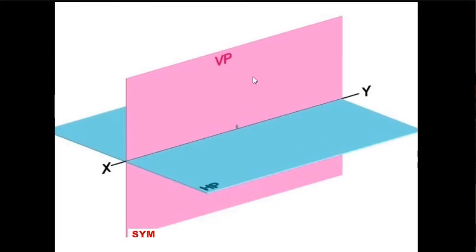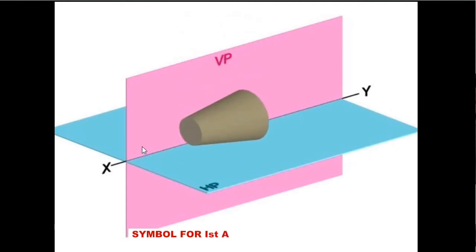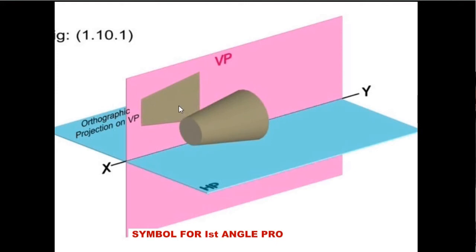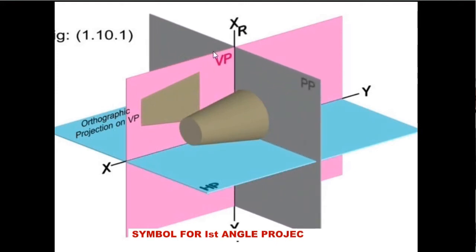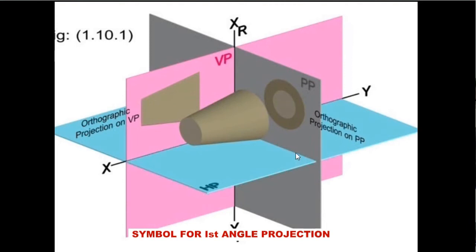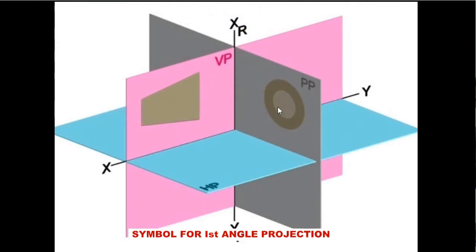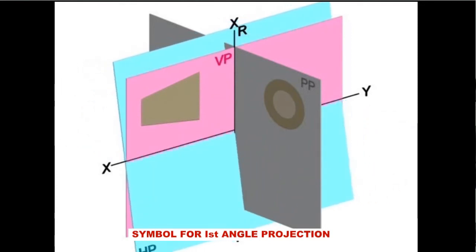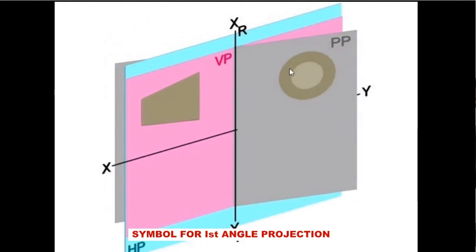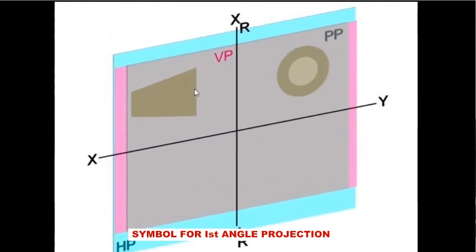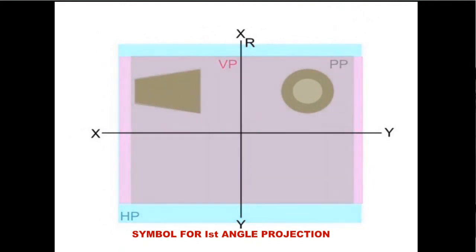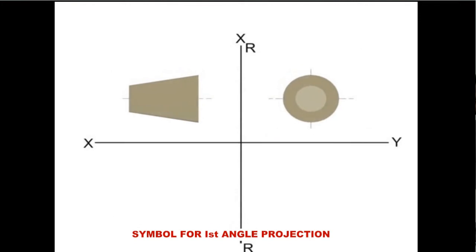These are the reference planes and I am considering the frustum of a cone in the first octant. We are getting the front view on the vertical plane and the left side view on this plane. After getting the projections, the actual object is removed. They are getting the left side view at the right side of the main front view. This is the symbol for the first angle projection.